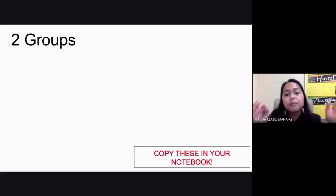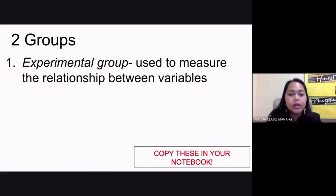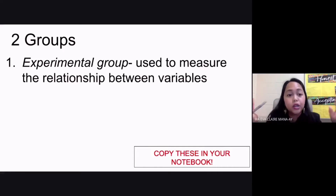Whenever you have your experiment, you'd be preparing two groups of your setup or two setups. The first group that you have here is your experimental group. That is the group that you use to measure the relationship between your variables. So this is really the group that you use in your experiment — hence, you call this your experimental group.